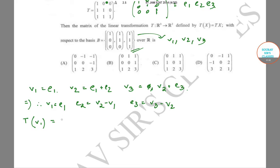Now, what is T(v1)? T(v1) = T(e1), which equals the first column of the matrix, which is just v3.